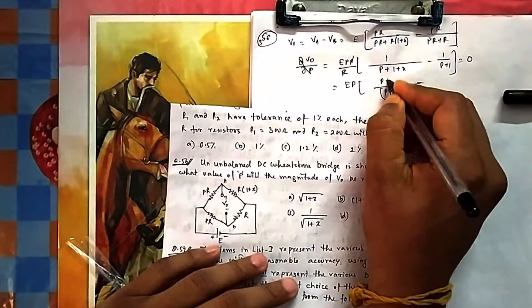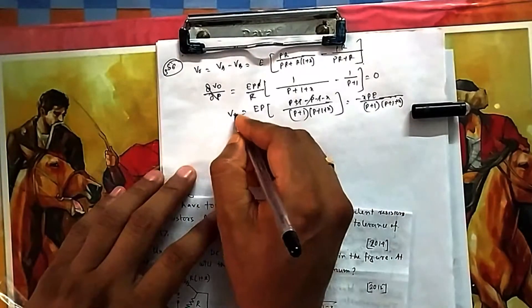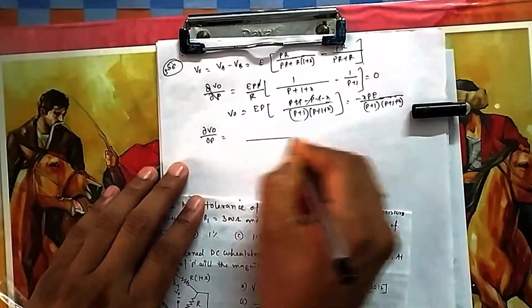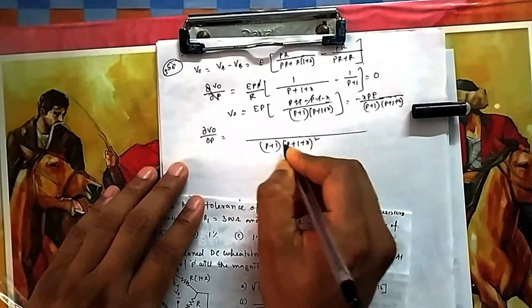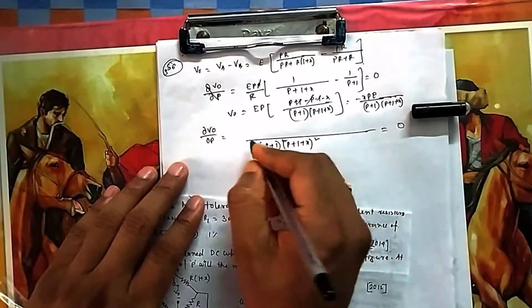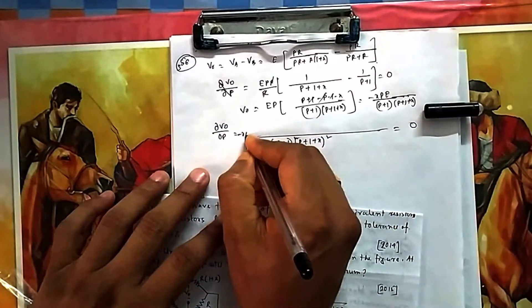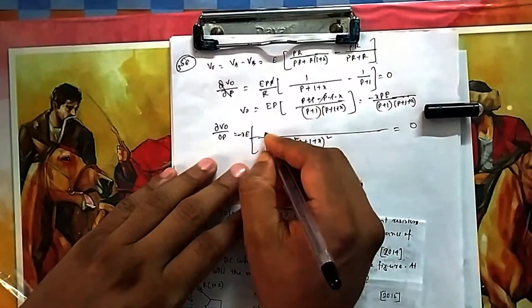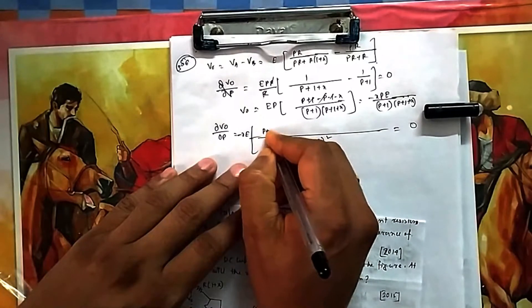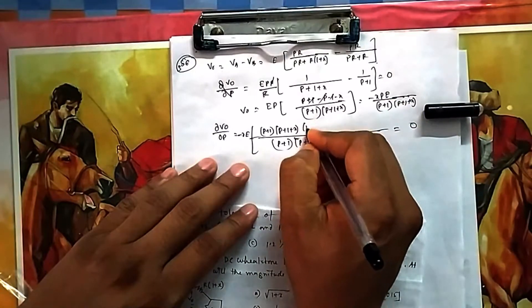After simplification, p and 1 terms cancel, giving the expression for V0. Differentiating V0 with respect to p: the denominator squared — (p+1)(p+1+x) whole squared — will be set to zero for the maximum, so it drops out. The remaining terms have E as constant outside; p is the only variable. The first denominator factor (p+1)(p+1+x) remains, and differentiation of the numerator gives 1.